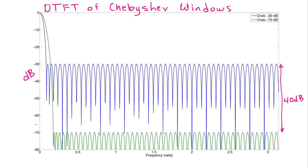Now the main lobe width is quite a bit wider. The minus 70 dB main lobe is this wide, whereas the minus 30 dB main lobe is that wide.